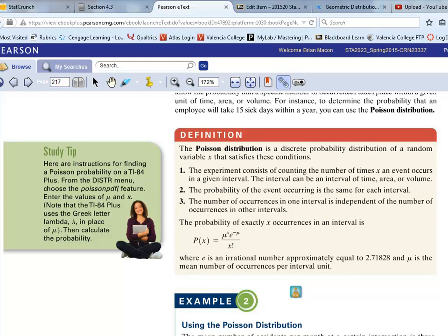In this video, I want to show you how to use StatCrunch to calculate a Poisson probability. So again, in the textbook, a Poisson distribution is a discrete probability distribution of a random variable.